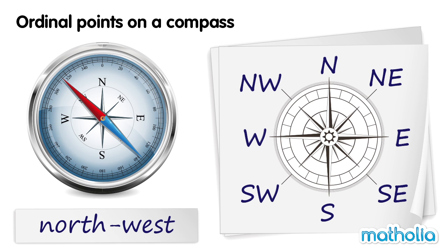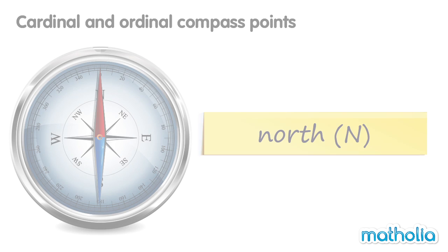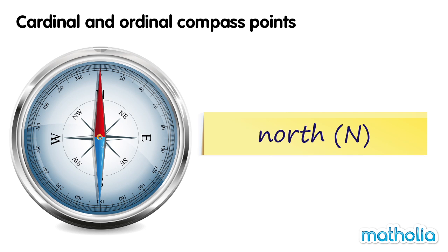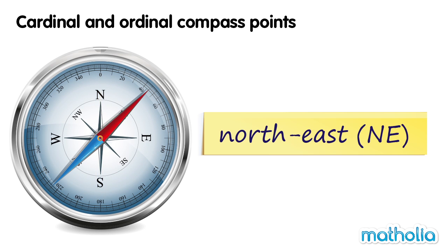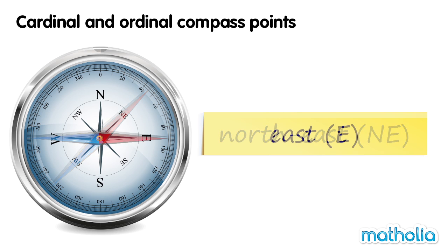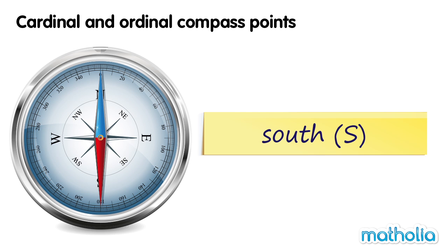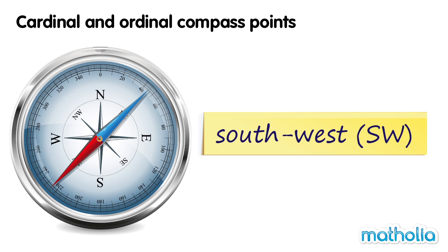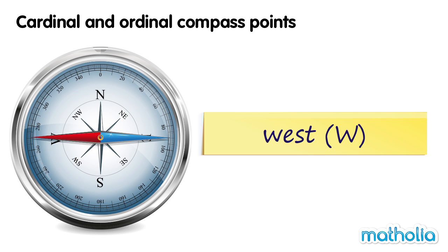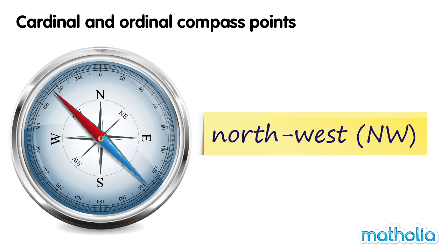The cardinal and ordinal points on a compass are north, northeast, east, southeast, southwest, west, and northwest.